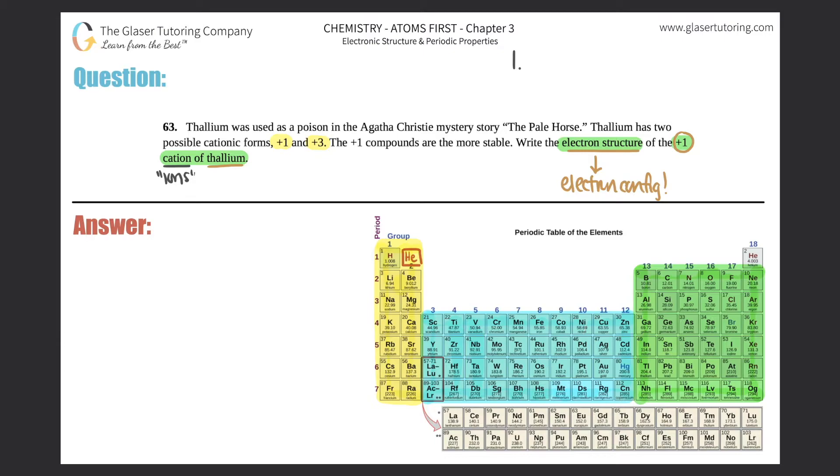You're going to write the electron configuration (the EC) for the atom, disregard the charge. The second step is then you're going to adjust for the charge. You're going to either add electrons or take away electrons depending on what the charge is.